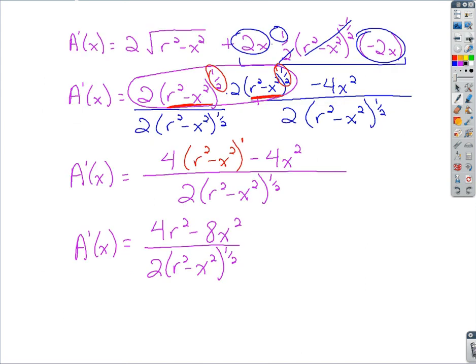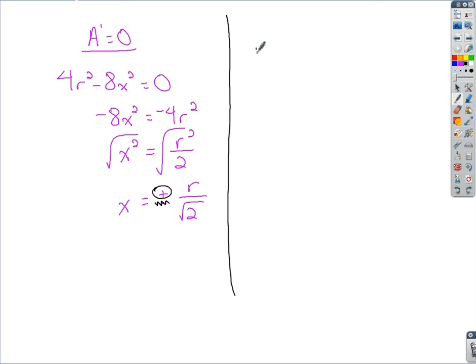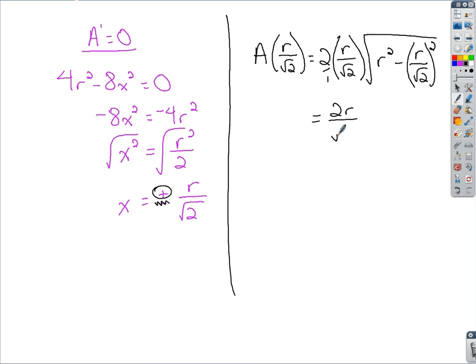We're going to find A of r over root 2. So if you plug in, it was 2 times x, so r over root 2, and it was the square root of r squared minus x. So x, that's r over root 2, we're squaring that. All we've got to do is simplify. We've got our answer. So a little bit of cleanup involved outside. This would be 2 over 1, multiply, you've got 2r over root 2.